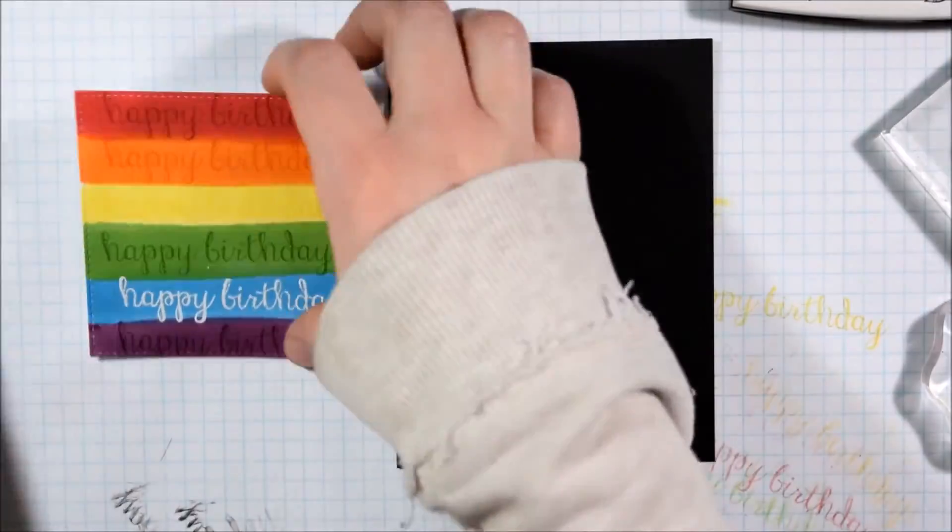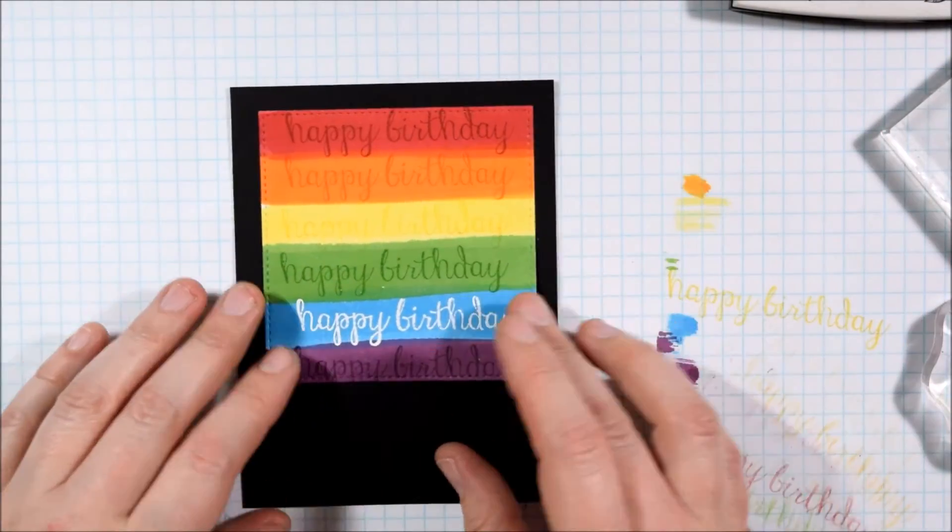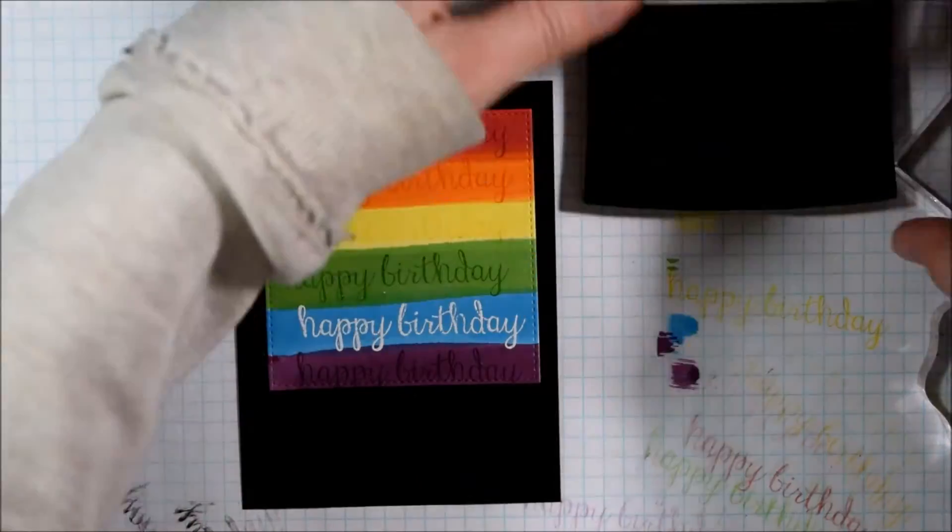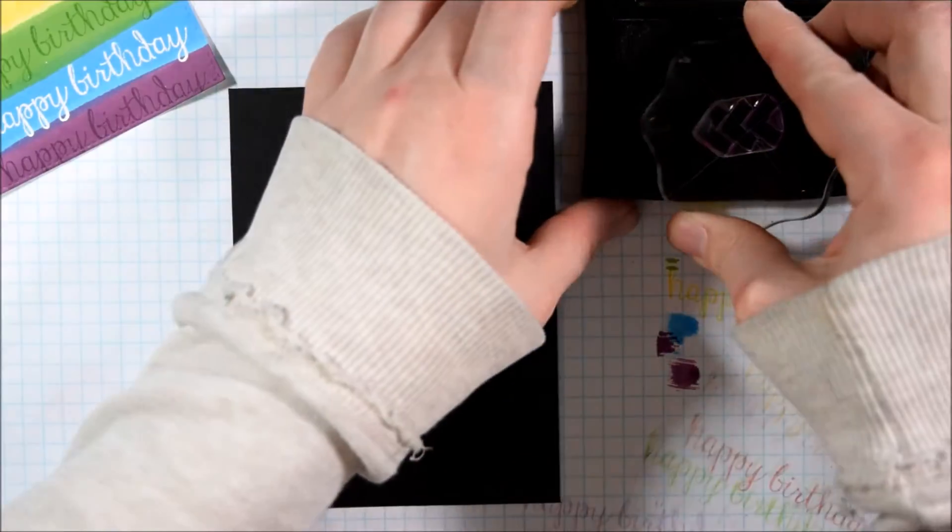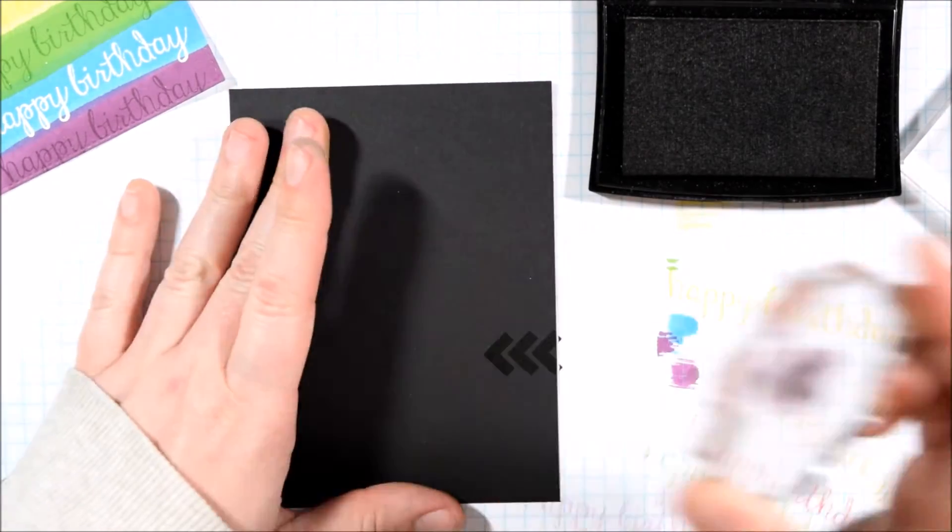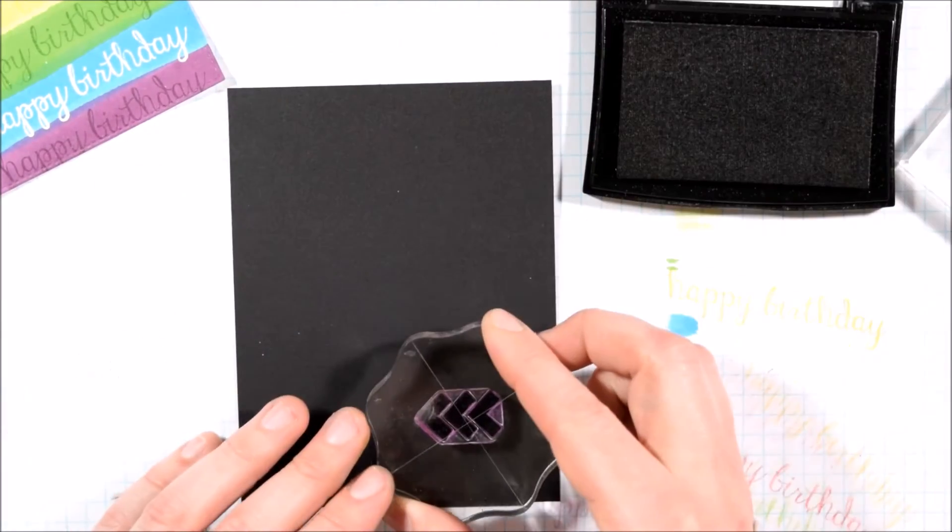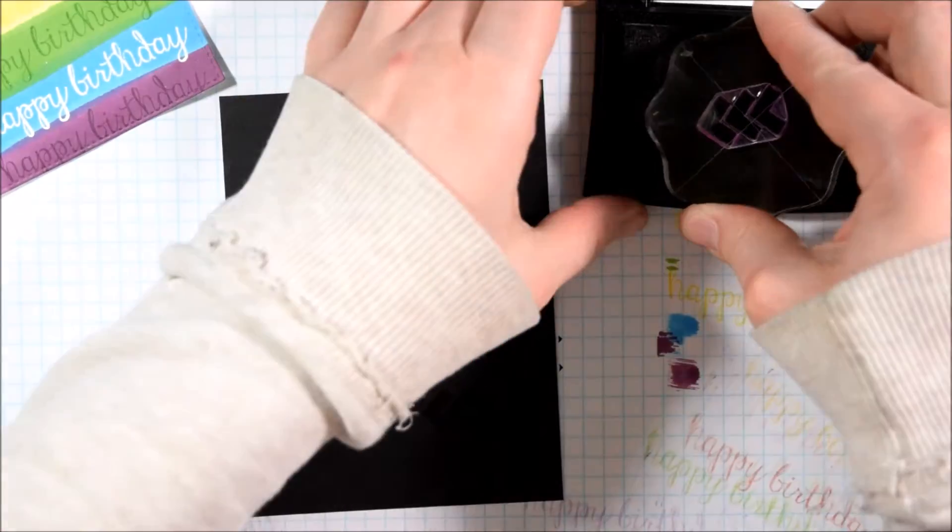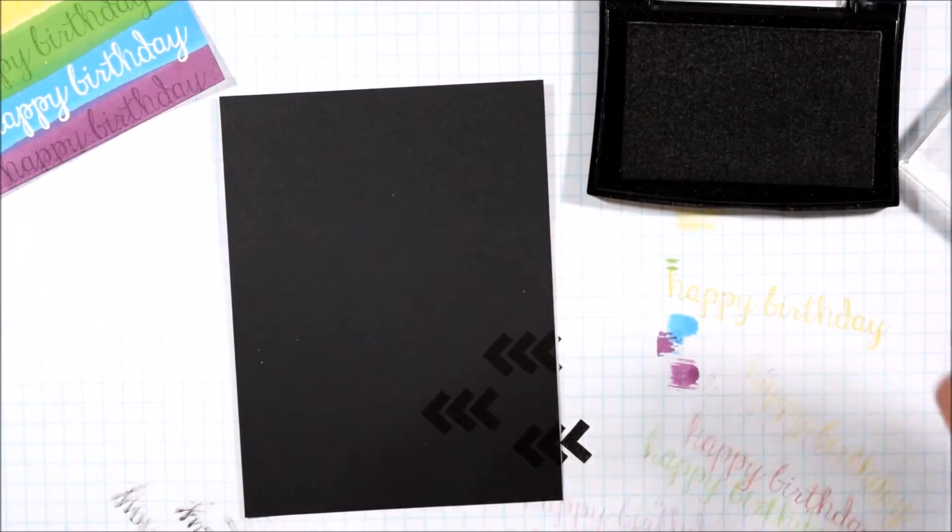Once I had that rainbow of sentiments completed I just cut it with an MFT stitched square die to add a little bit of interest around it and then I'm going to put it on some black cardstock. I absolutely love the way that rainbows pop off of black so I usually put them on a black card base.